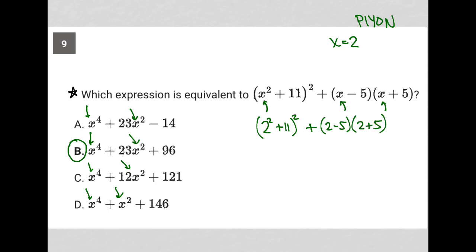So I'm just plugging in my own number here. Now, I'm going to simplify that. So 2 squared is 4. 4 plus 11 is 15. So I have 15 squared plus 2 minus 5 is negative 3. And 2 plus 5 is 7. And of course, we could just put this whole thing in the calculator, and it'll spit out an answer for you as well. I'm just showing you step by step. And then I have negative 3 times 7 is negative 21.